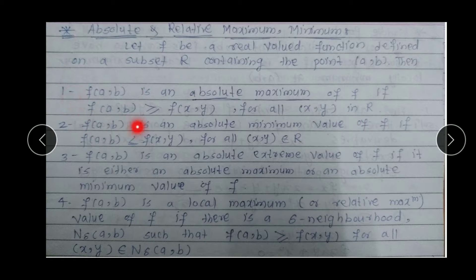If our F(A,B) is greater than or equal to F(x,y) for every point of the given set R, then the value at that point is either equal to F(A,B) or smaller than it. This means F(A,B) becomes the greatest value — so F(A,B) is called the Absolute Maximum of F.